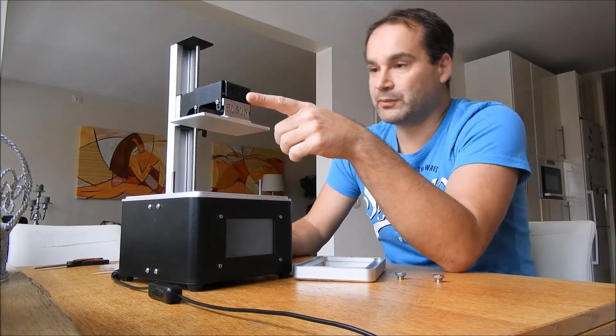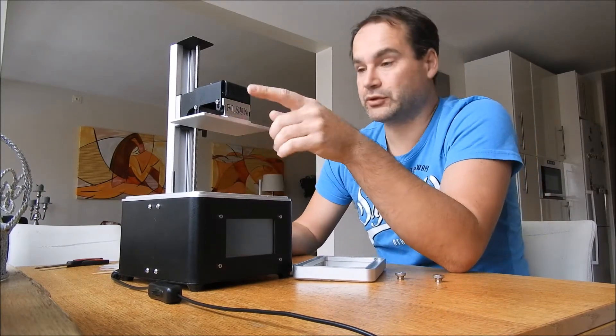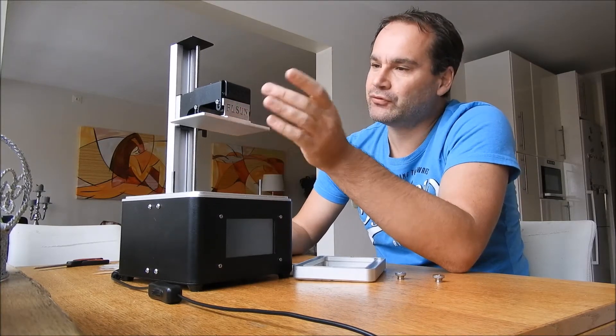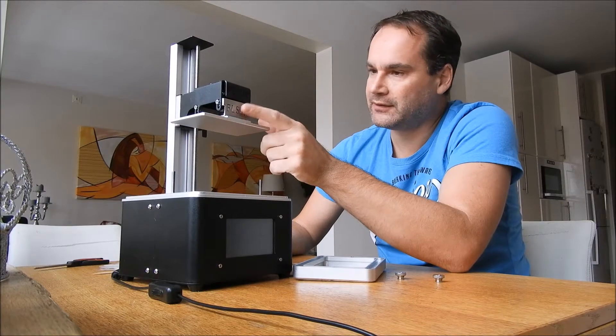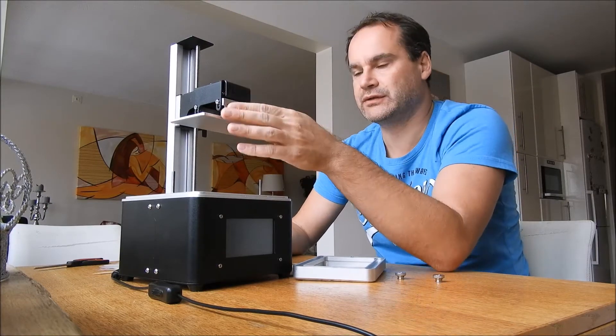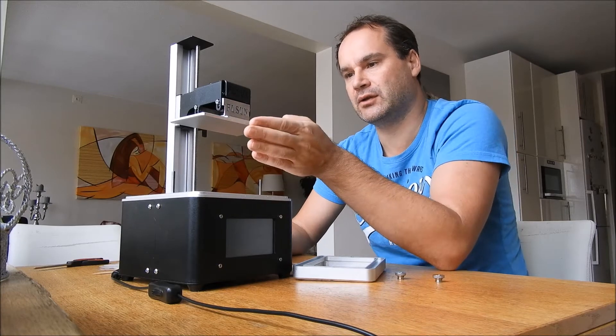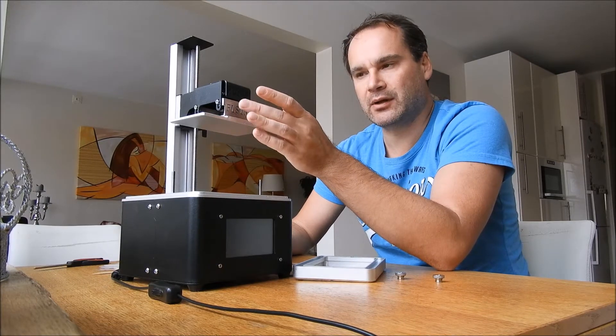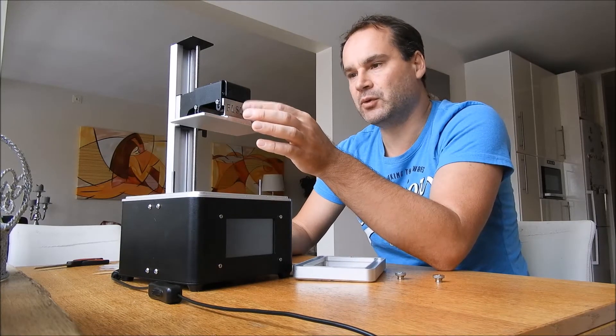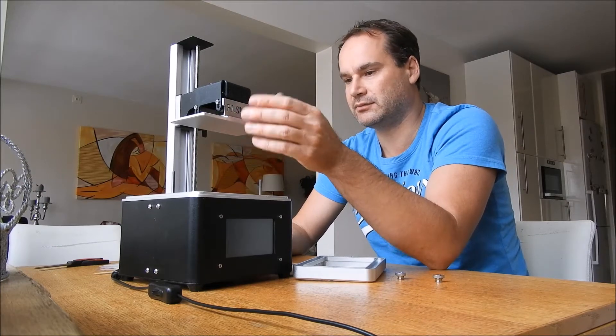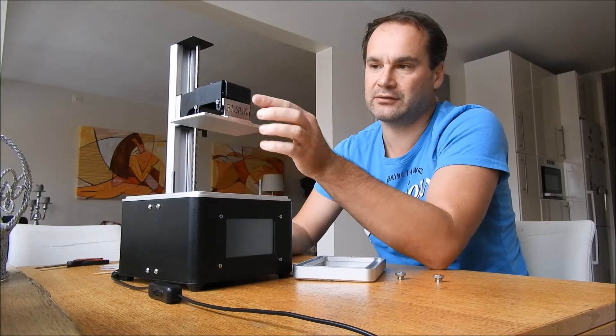And actually one more small thing, for me it's important and maybe for you also. I removed paint, black paint, from this part because it starts somehow reacting with UV resin and becomes very soft. Small pieces of paint start to fall into my resin. That's why I decided to remove it.